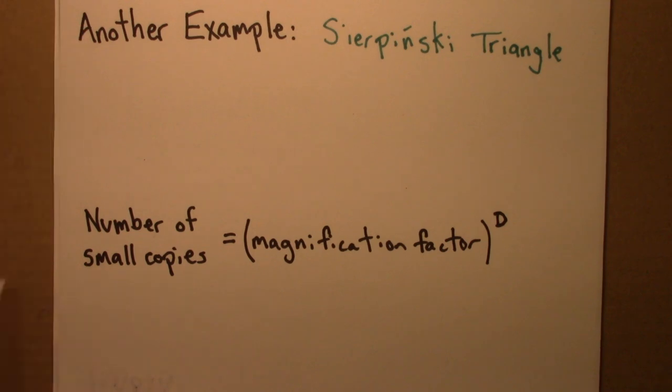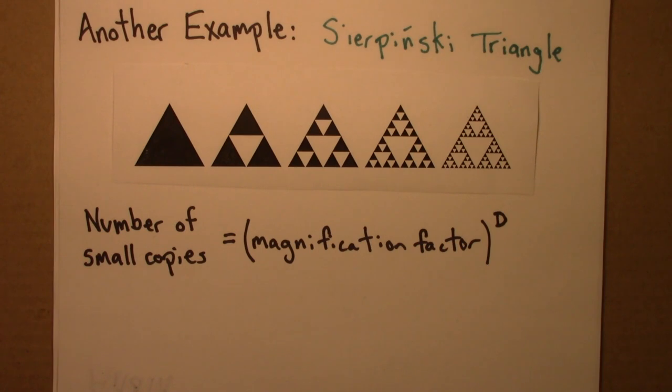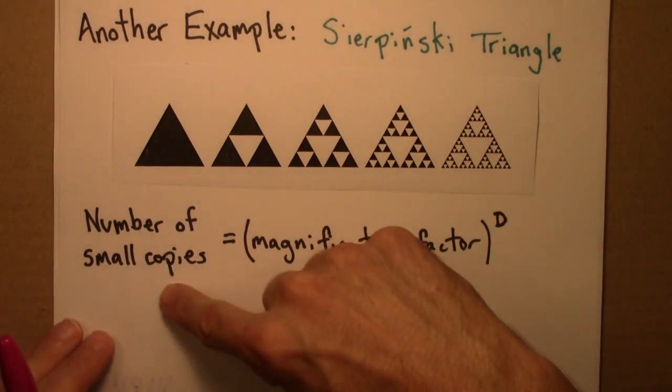Okay. So now, let's calculate the self-similarity dimension. So, number of small copies.